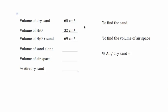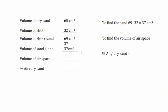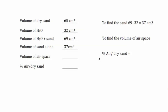All right, now that we have the data that we needed to measure, we can calculate the other information that we want to know. We're going to start with the volume of the sand alone. We know that we started with 32 cubic centimeters of water, and when we added the sand to it, it rose to 69 cubic centimeters. So, by subtracting 32 from 69, we end up with 37 cubic centimeters.